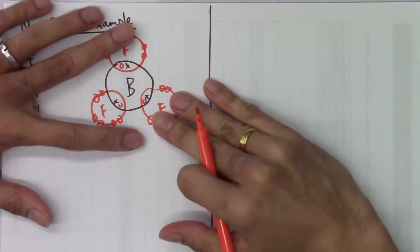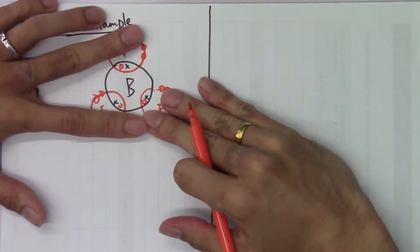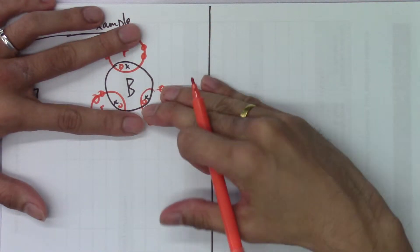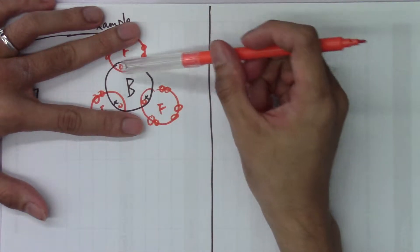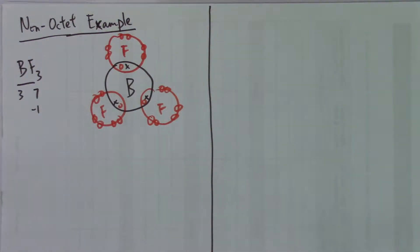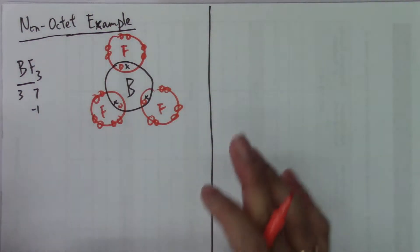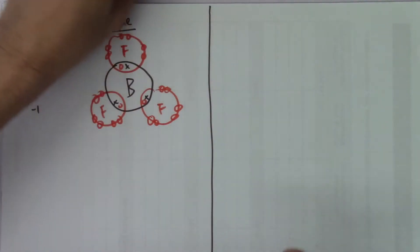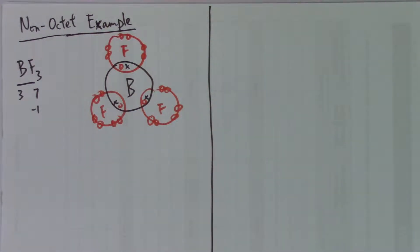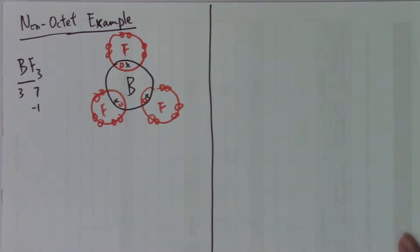When we count the number of electrons on boron, there will be only six electrons. So in this case, it does not reach the octet structure. But still, this BF3 compound is relatively stable — so this is an interesting example.